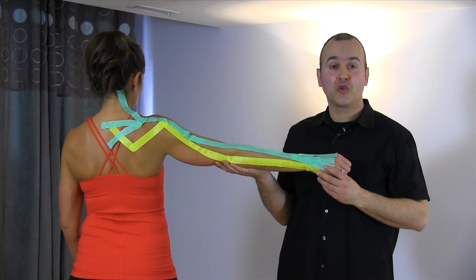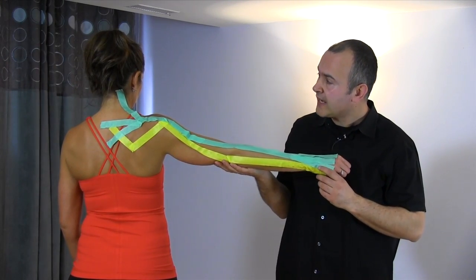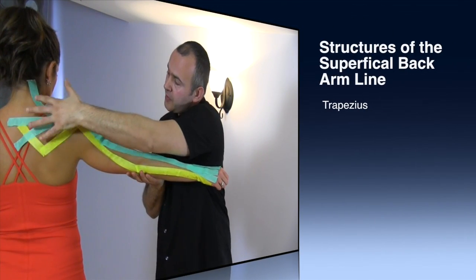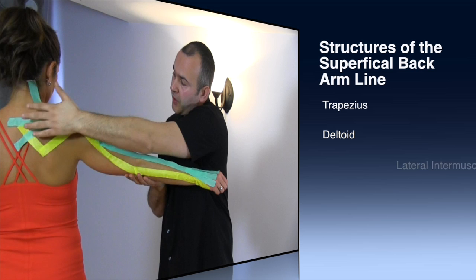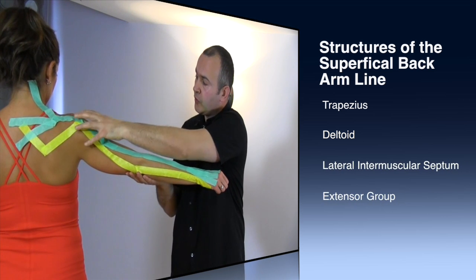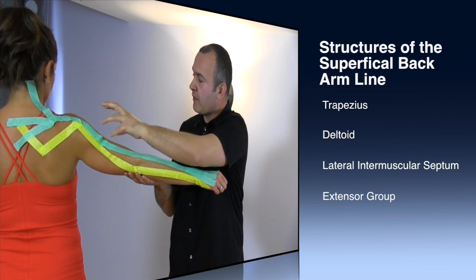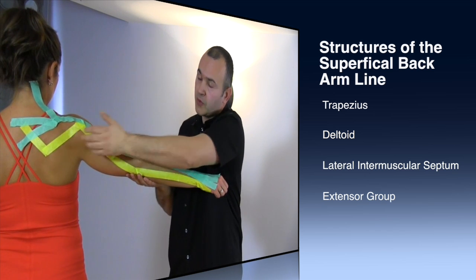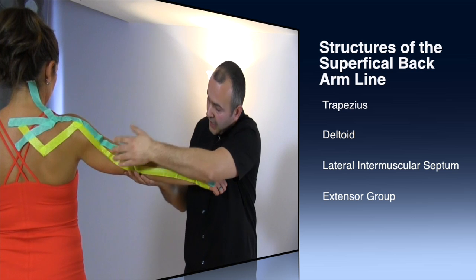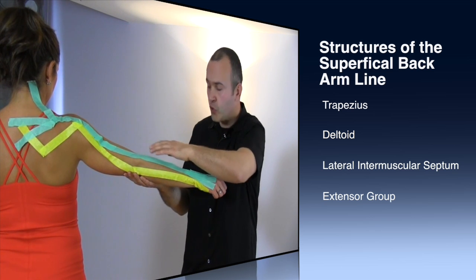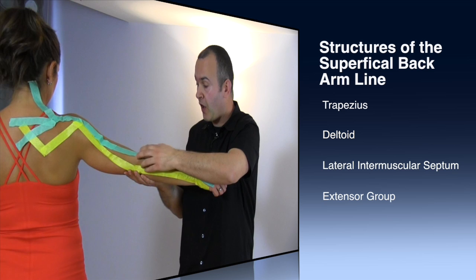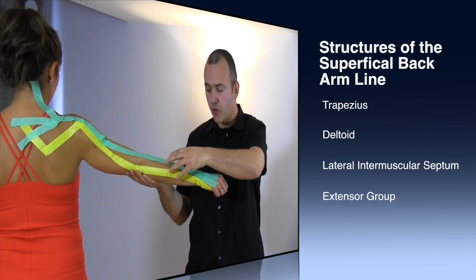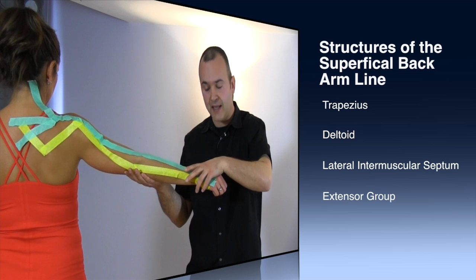Now that Brian's taped the superficial back arm line, you can see how it starts right up here in the suboccipital region, coming down and covering basically the entire trapezius — the upper, mid, and lower part — coming across into the deltoid. This particular line can be involved more in a deltoid-type problem, a strain or an imbalance, versus the other line, which is more of a rotator cuff issue. Following it down, it parallels the other line but more superficially, once again into the lateral epicondyle, which could be involved in tennis elbow type complaints.